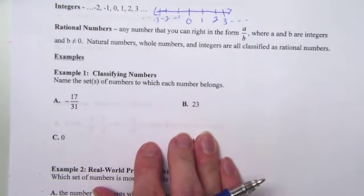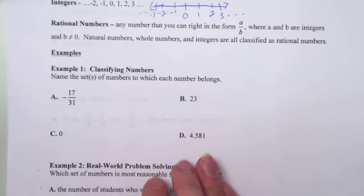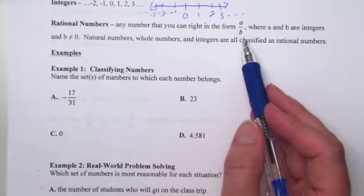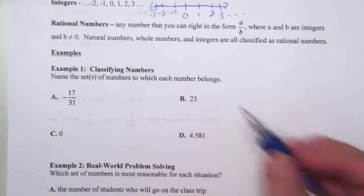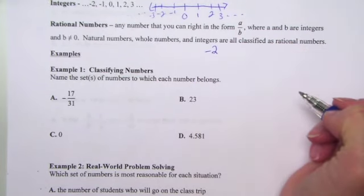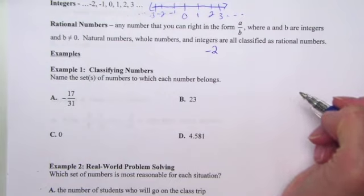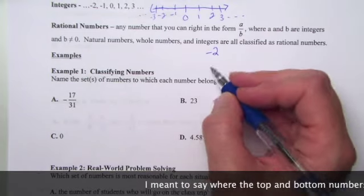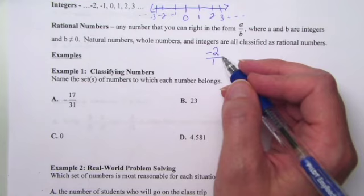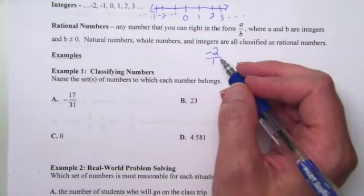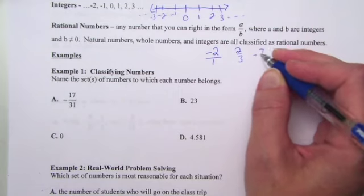Rational numbers are any number that you can write in the form A over B, where A and B are integers, and B is not 0 — we can't have 0 in a denominator. Natural numbers, whole numbers, and integers are all classified as rational numbers. For example, we could take the integer negative 2 and write it as negative 2 over 1, where the numerator and the denominator are both integers. So these are your fractions — examples might be 2/3 or negative 7/8.